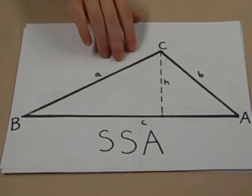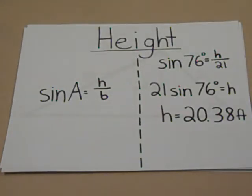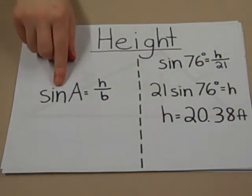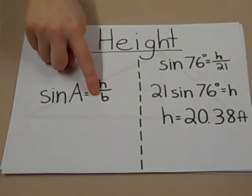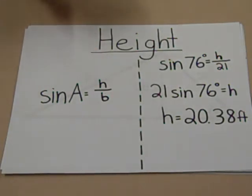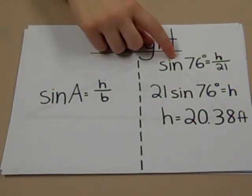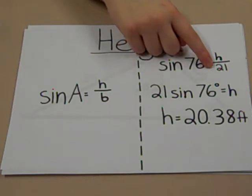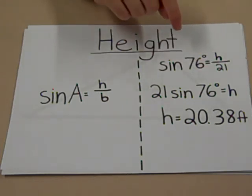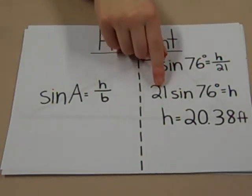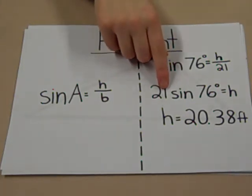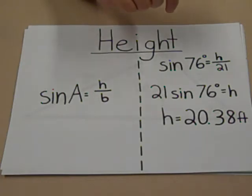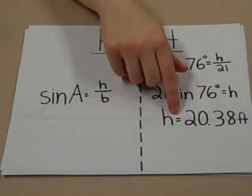First, we need to know the height. That can be done by doing the simple equation of the formula sine of A equals H over B. So, plugging in the values we already know, sine of 76 degrees equals H over 21. At this point, we work backwards. Multiply both sides by 21, and then we get H equals 21 sine of 76 degrees. Plugging that into the calculator, we will get H equals 20.38 feet.